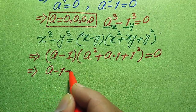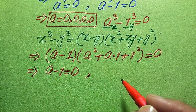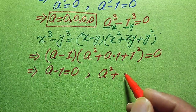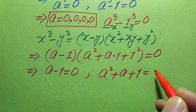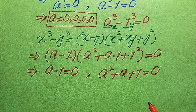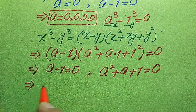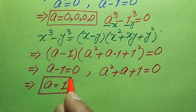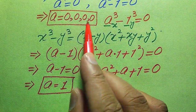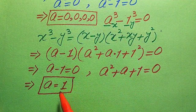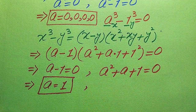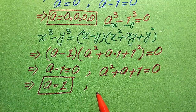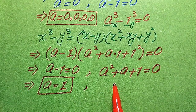We divide this into two cases. The first case is a minus 1 equals 0, and the second case is a squared plus a plus 1 equals 0. From the first case, we get a equals 1. This is the fifth root of the given equation — a distinct root different from the four repeated zeros. So these are five roots found so far.